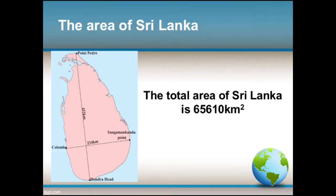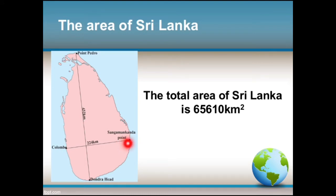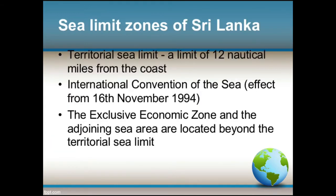When considering the area of Sri Lanka, the length from Point Pedro to Dondra Head is 432 kilometers, and the width from Colombo to Sangamankanda Point is 224 kilometers. The total area of Sri Lanka is 65,610 square kilometers.